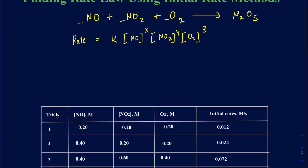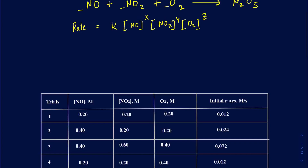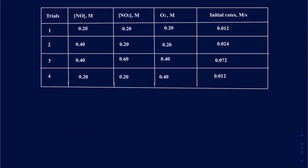Here we're focusing on using initial rate methods to figure out X, Y, and Z. We look at this table of experimental initial rates where concentrations of the three reactants are being changed. The key strategy is to pick pairs of trials where the concentration of only one reactant is changing while the concentrations of the other two reactants stay the same.